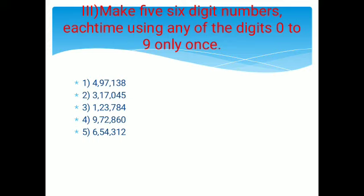One important thing: you will not begin any number with 0. You must always begin a number with 1 to 9, not with 0, because then it will not be a 6-digit number. The third answer is 1,23,784 — one lakh twenty-three thousand seven hundred and eighty-four. The fourth answer is 9,72,860 — nine lakh seventy-two thousand eight hundred and sixty. The fifth answer is 6,54,312 — six lakh fifty-four thousand three hundred and twelve. These are the five 6-digit numbers made using digits 0 to 9 only once, and no number begins with zero.